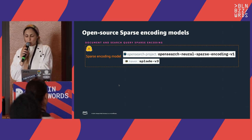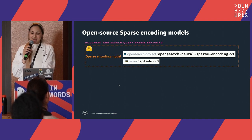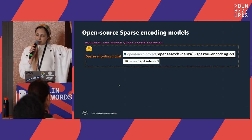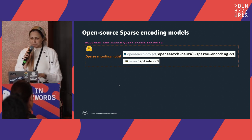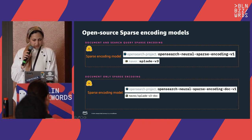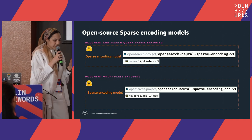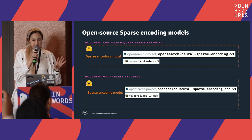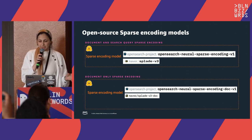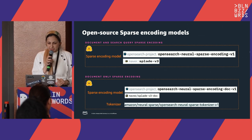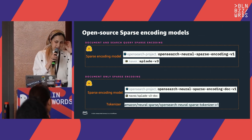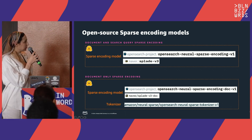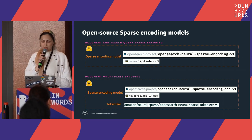OpenSearch has also released open-source sparse encoding models that we can use to encode documents and queries. OpenSearch and SPLADE also released a document-only encoding model to generate encodings at ingest time, offline. At search time, you can use a tokenizer — an open-source tokenizer model released by OpenSearch, available on Hugging Face.